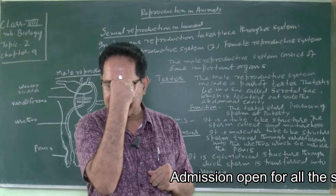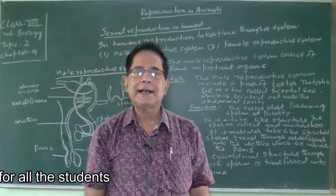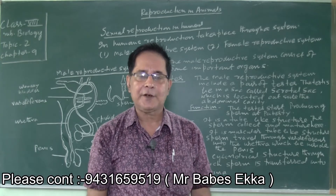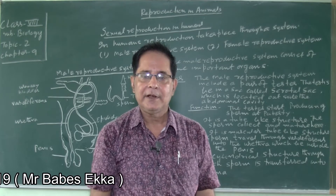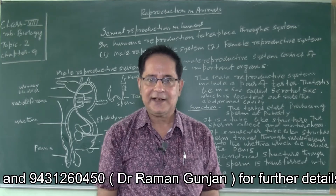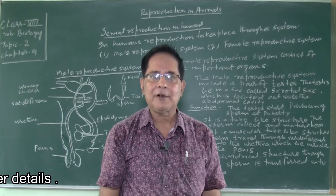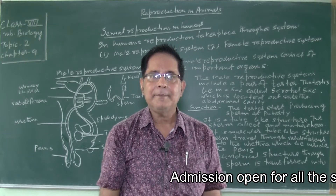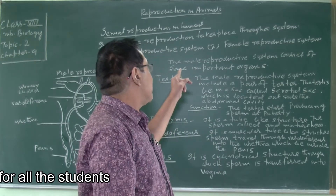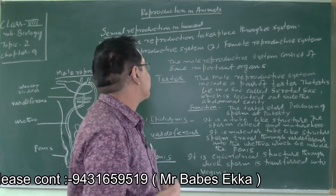Any system consists of some organs — like the digestive system consists of stomach, food pipe, small intestine, large intestine, etc. Just like that, the reproductive system also consists of some important organs. We will first discuss about the male reproductive system.